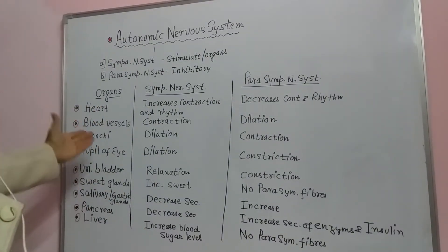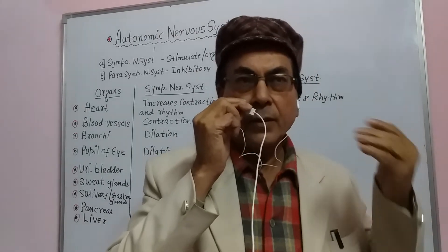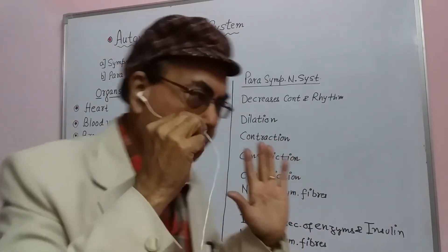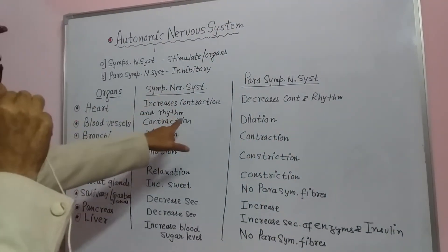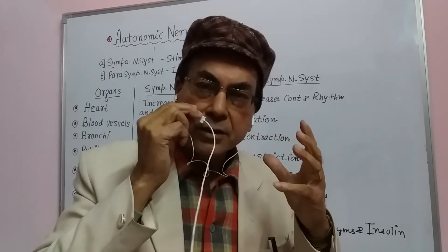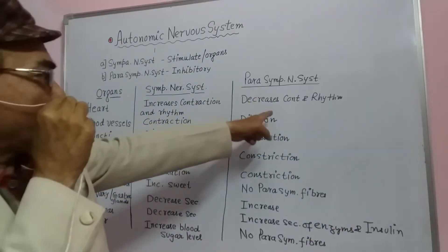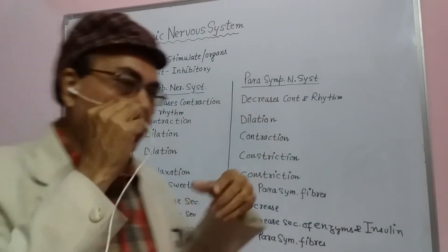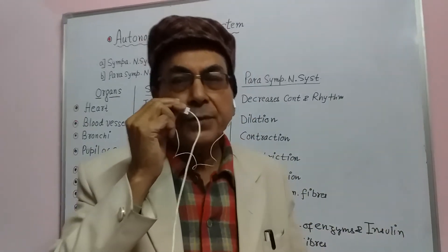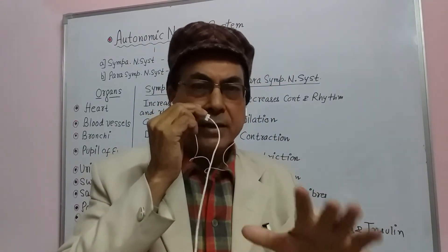The second example is the blood vessels — the arteries and veins through which the flow of blood takes place. The sympathetic nervous system contracts the blood vessels, while the parasympathetic nervous system helps in dilation — it dilates them. If one contracts, the other dilates, so that the balance is maintained.